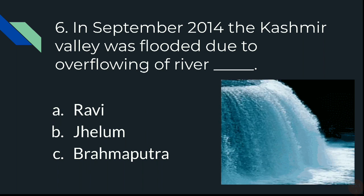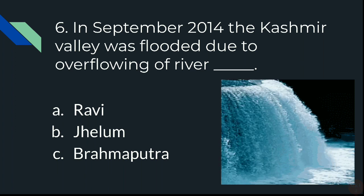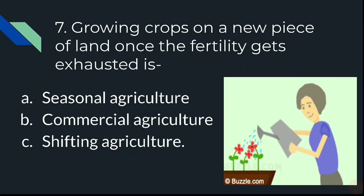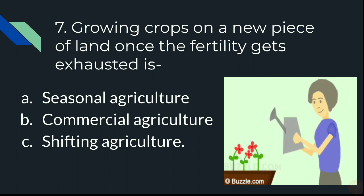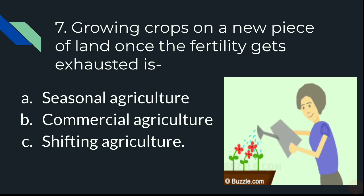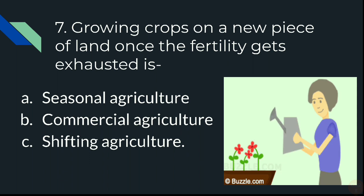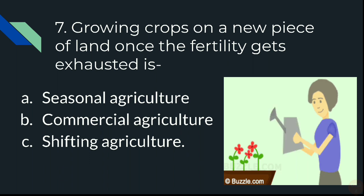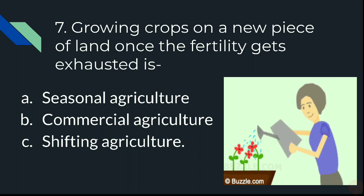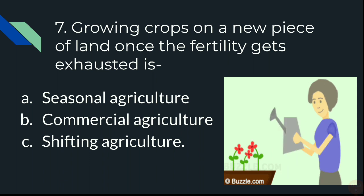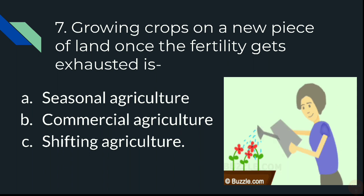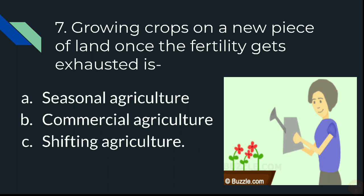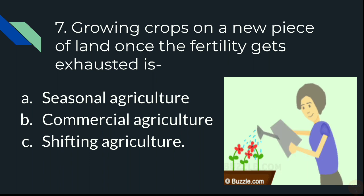Question 7: Growing crops on a new piece of land once the fertility gets exhausted — A) Seasonal agriculture, B) Commercial agriculture, or C) Shifting agriculture.